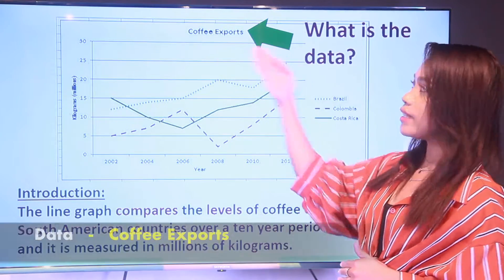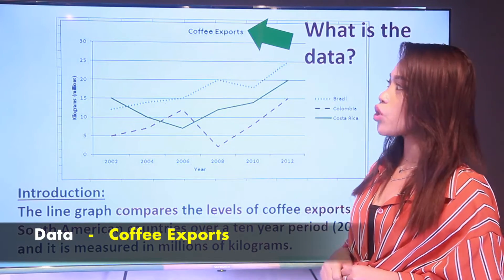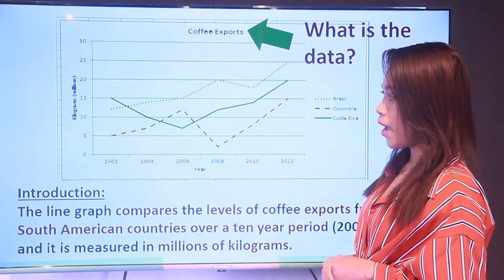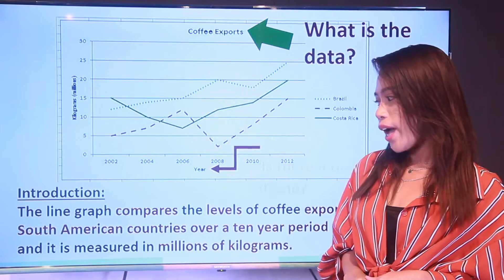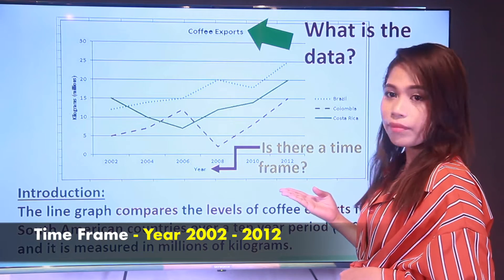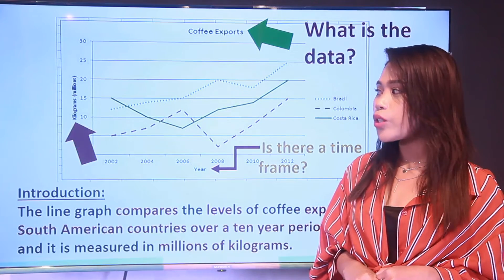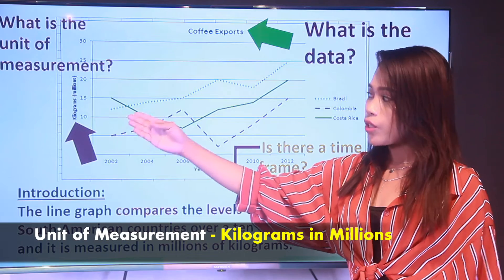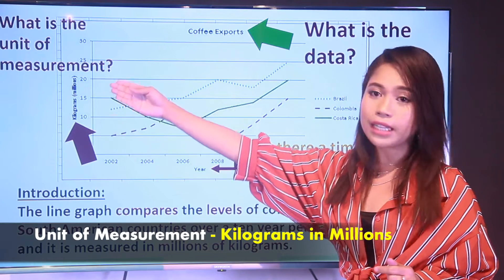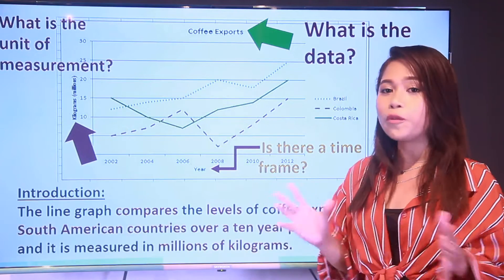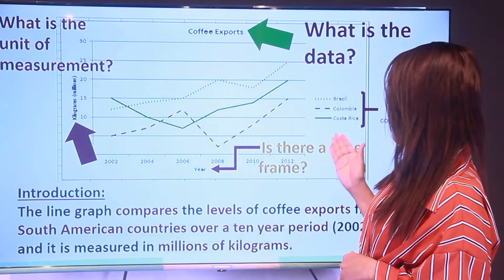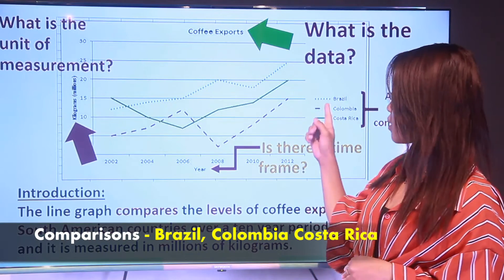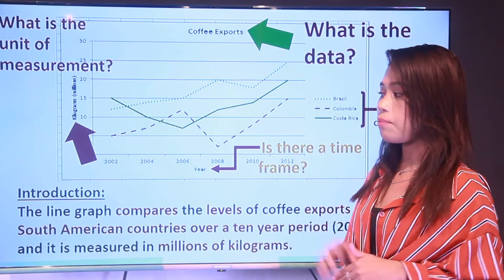First, what is the data? The line graph shows coffee exports — the amount of coffee exports — and also check if there is a time frame. Also look at what is the unit of measurement. Here we've got kilograms in millions. And also find if there are some comparisons — here we've got three countries: Brazil, Colombia, and Costa Rica being compared.